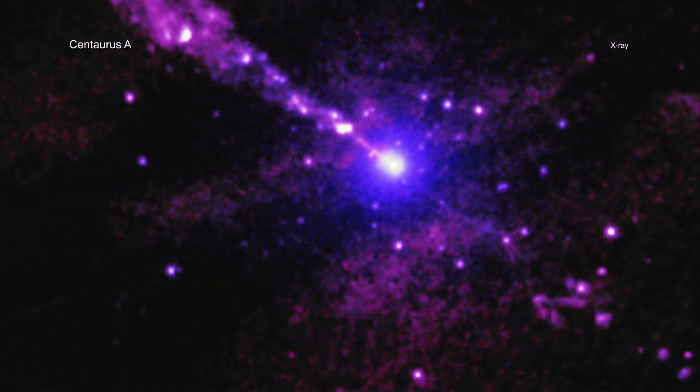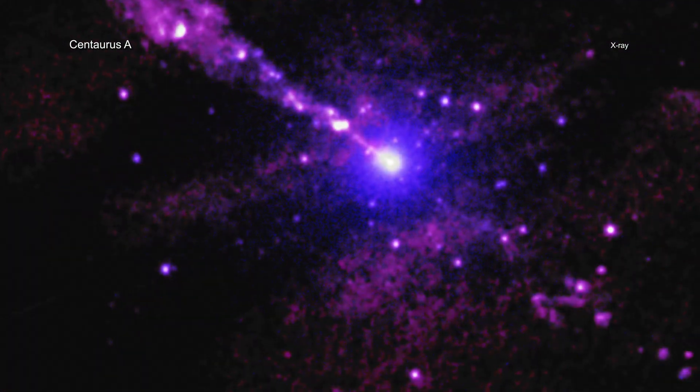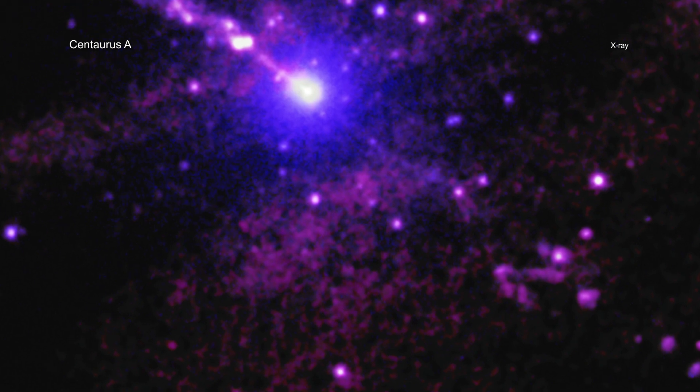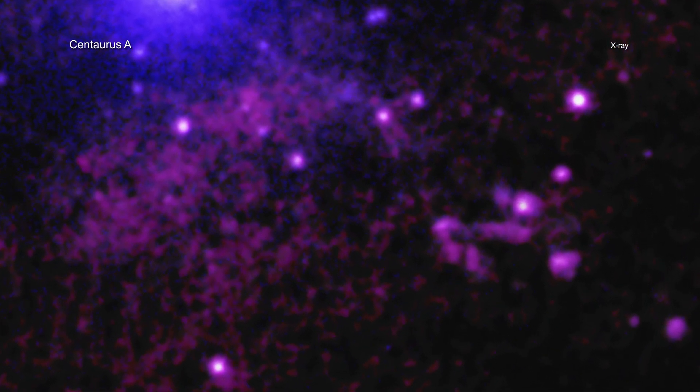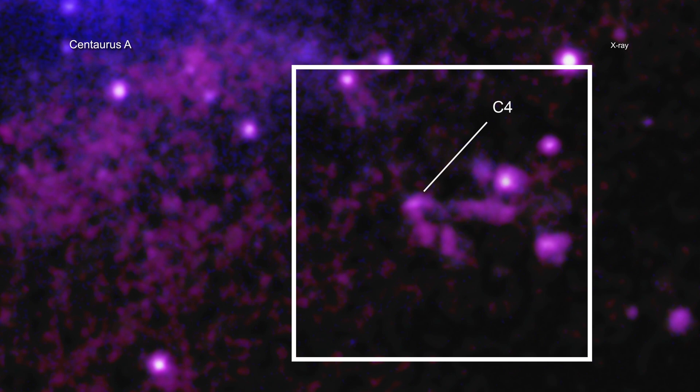Using NASA's Chandra X-ray Observatory, astronomers have found an unusual mark from a giant black hole's powerful jet striking an unidentified object in its path.